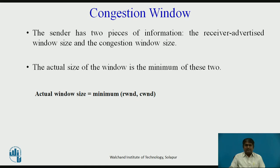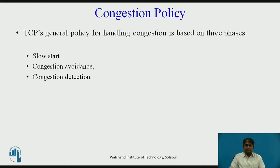The sender has two pieces of information: the receiver advertised window size and the congestion window size. The actual size of the window is the minimum of these two — that is, the minimum of the receiver window and the congestion window.